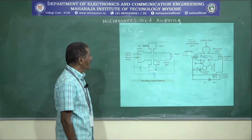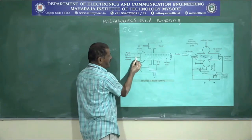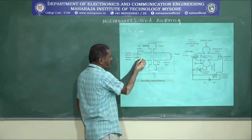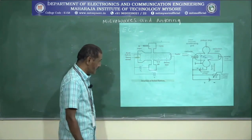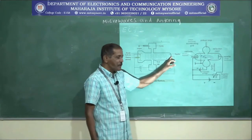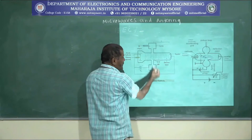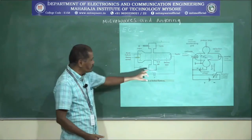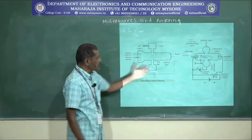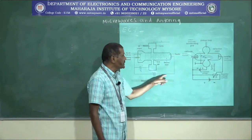Let us see the construction details of the reflex klystron. It is basically a vacuum tube. There is a cathode with heating elements — when the heating elements get heated, heat energy transfers to the cathode, which then emits electrons. Instead of calling the plate an anode, we call it a repeller. Instead of a control grid, we have cavities. A positive voltage is applied to the cavity and a negative voltage is applied to the repeller.